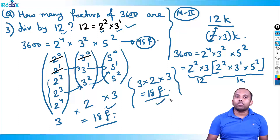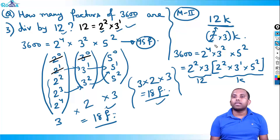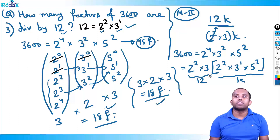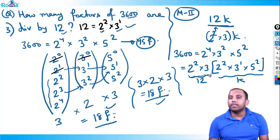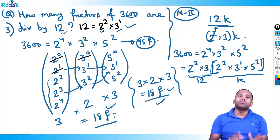So 18 factors of 3600 are divisible by 12. Method 2 is much faster: write the divisor in prime form, take it as common from 3600, and count the factors of what remains inside the bracket. Each of those 18 inner factors, when multiplied by 12, automatically becomes a multiple of 12. We should use Method 2 directly for speed, while Method 1 builds conceptual clarity for tougher questions.